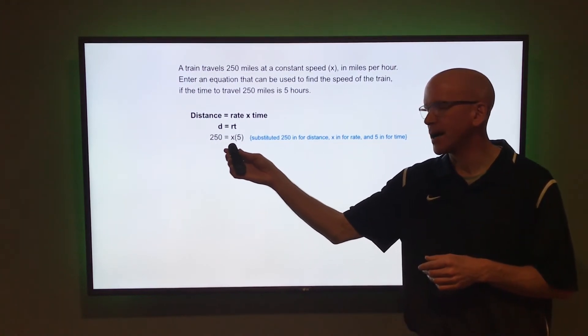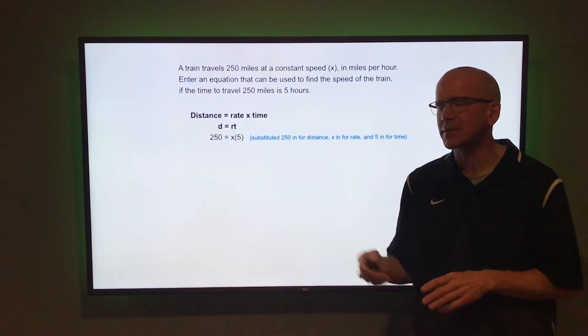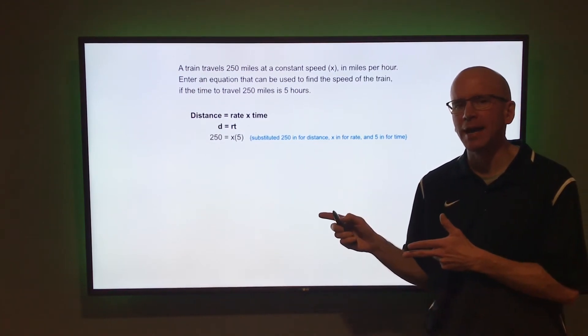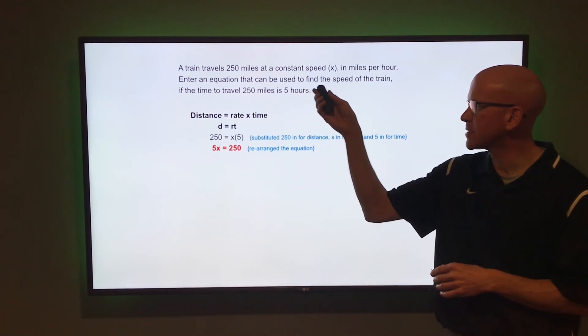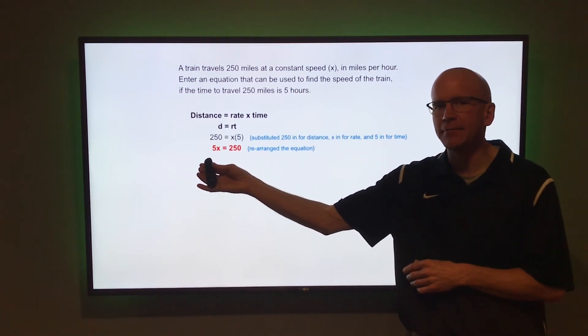So distance equals rate times time would be 250 equals x times five. Now you can rearrange that and write that as 5x equals 250. So an equation that could be used to find the speed of the train is 5x equals 250.